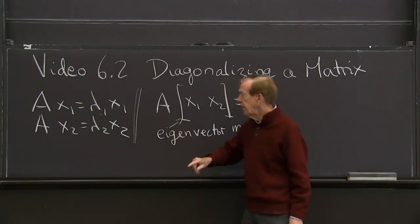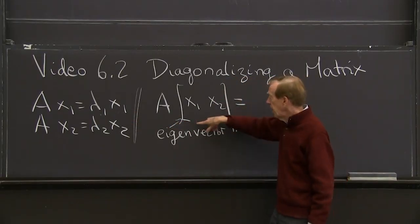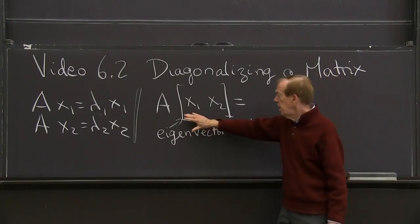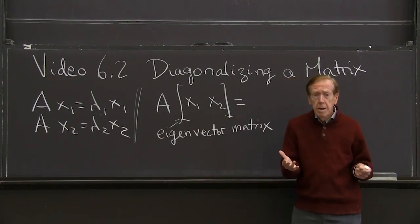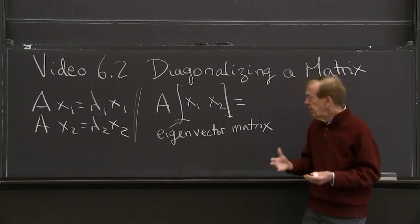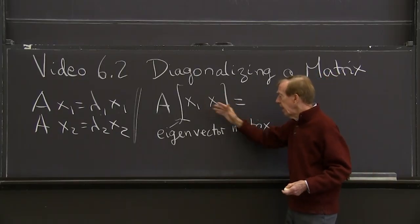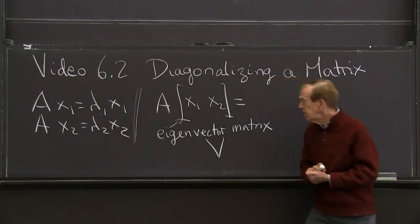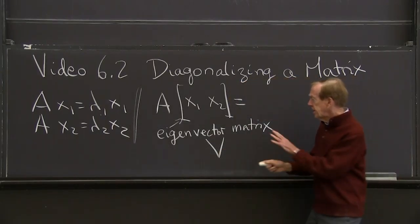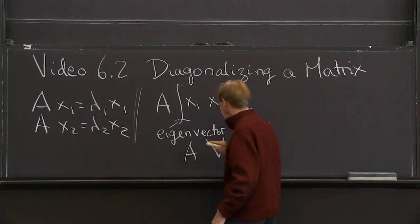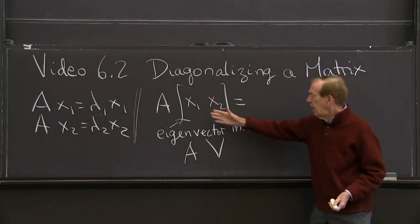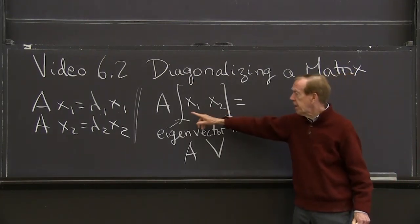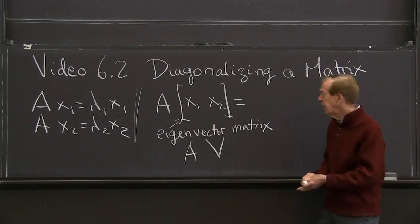By taking the two eigenvectors and putting them in the columns of my matrix. If I have n of them, that allows me to give one name, the eigenvector matrix. Maybe I'll call it V for vectors. So that's A times V. And now, just bear with me while I do that multiplication of A times the eigenvector matrix.